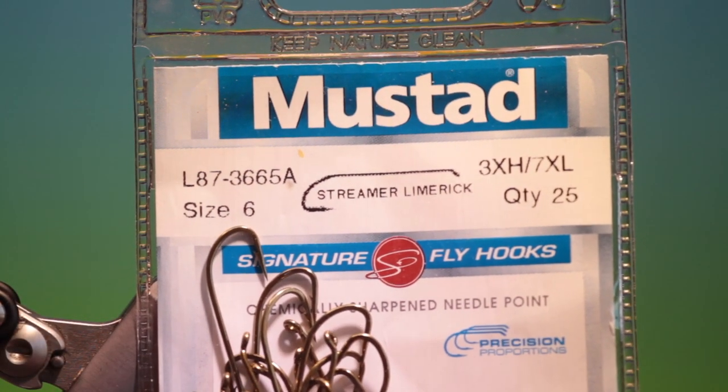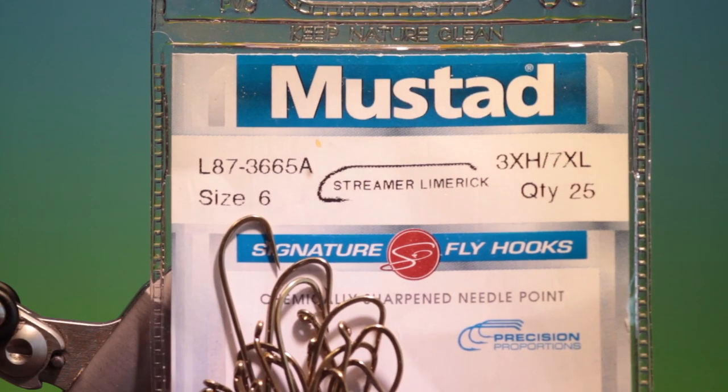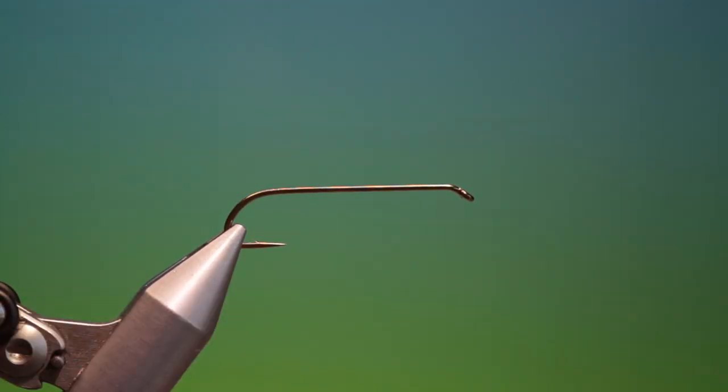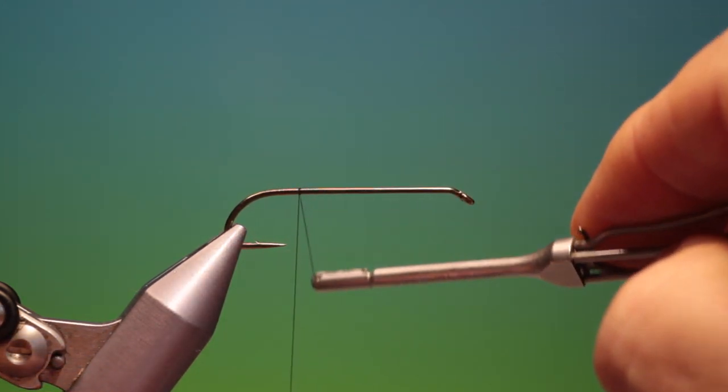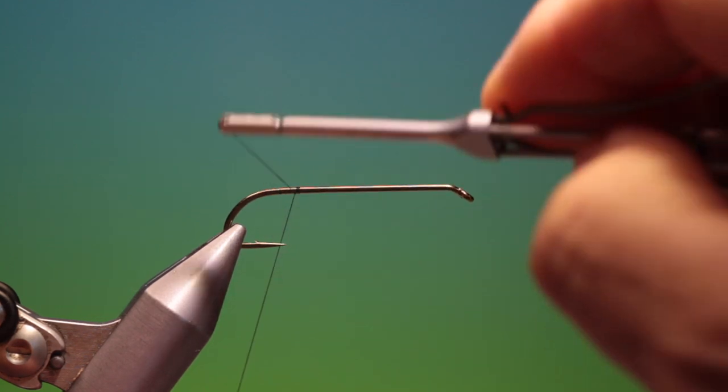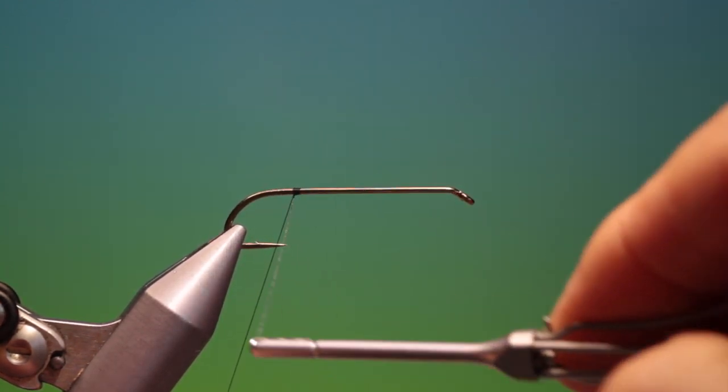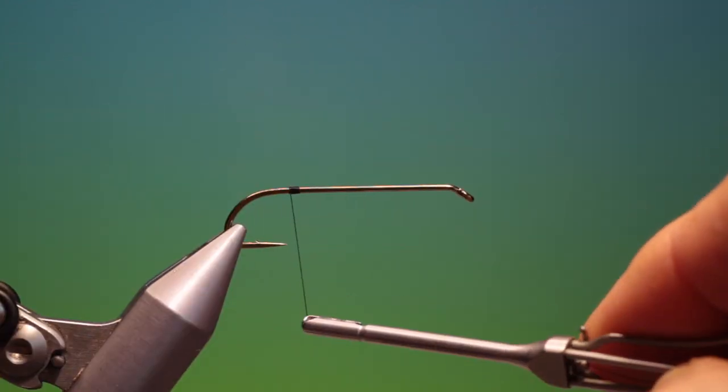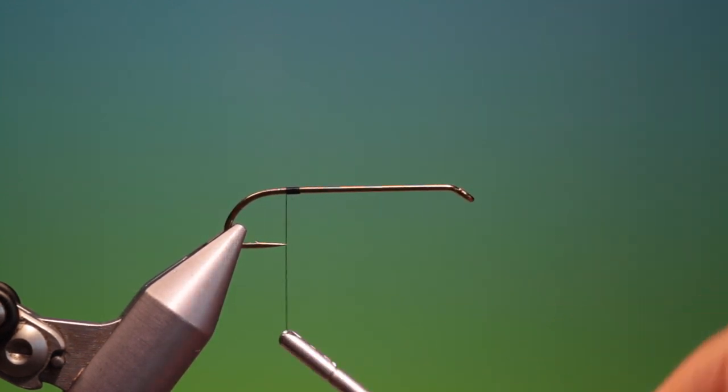We'll start with the Mustad 87 size 6 streamer limerick hook. I have Shear 14 hot black. This is the Governor Akin. So we'll just attach our tie-in thread back here. Now in touching turns we'll go back, just attaching it. Just so it hangs with the point.